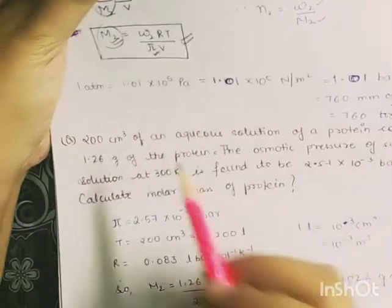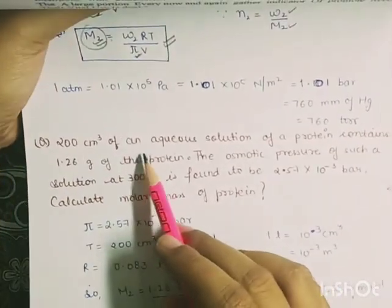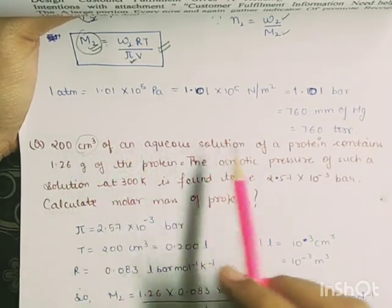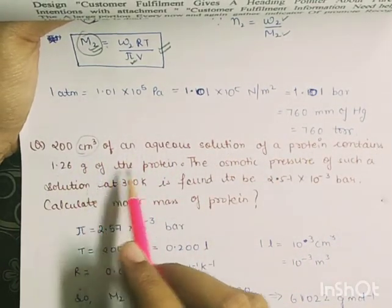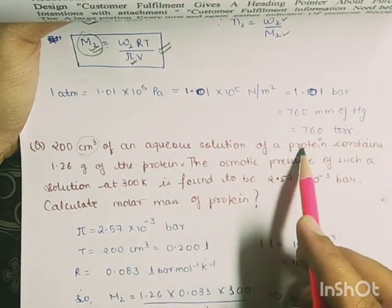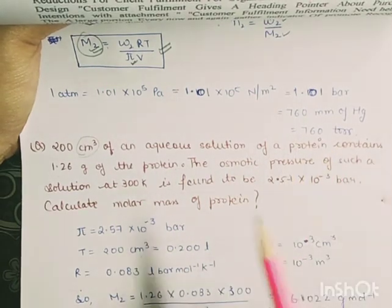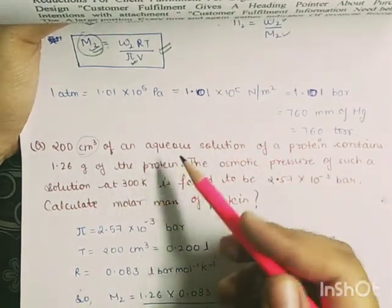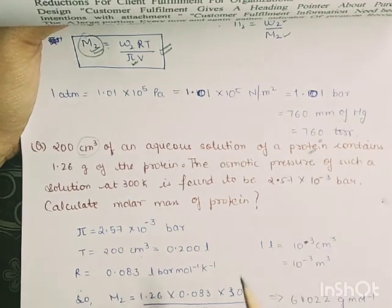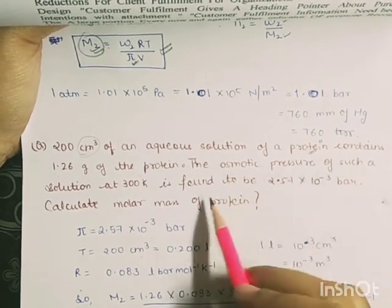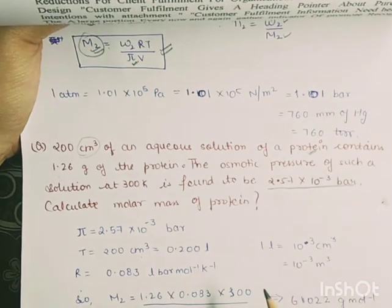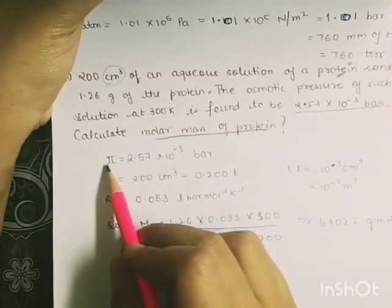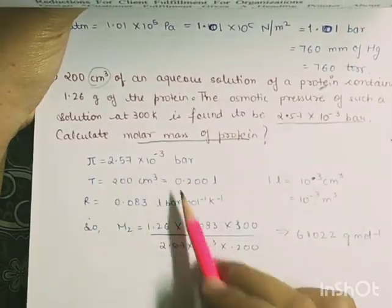Let's look at a numerical. 200 cm³ of an aqueous solution of protein contains 1.26 grams of the protein. Here water is the solvent and protein is the solute. The osmotic pressure given is 2.57 × 10⁻³ bar. We need to find the molar mass of the solute. The volume V = 200 cm³, which converting to liters gives 0.200 liters.